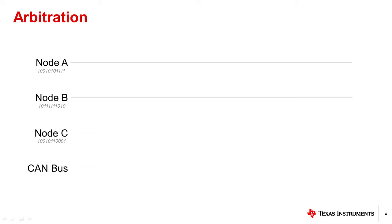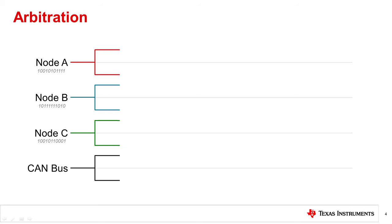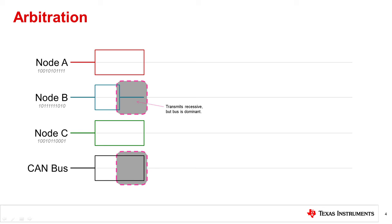Let's take a look at a simplified example of arbitration on the CAN or CAN FD bus. Imagine three nodes that access the same single CAN bus, each simultaneously beginning to send a message with message identifiers shown in gray. During the first bit, all three nodes transmit a recessive signal, since the first digit of each of their message identifiers is a 1, so the CAN bus is recessive. Next, all three nodes transmit a dominant bit representing the second digit of each of their identifiers, and the CAN bus is dominant. During the third bit, however, node B transmits a recessive signal, but since at least one device on the network is transmitting a dominant signal, the bus carries a dominant signal. At this point, node B has lost arbitration, since another message on the bus has higher priority.